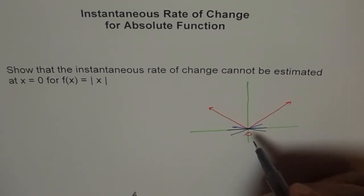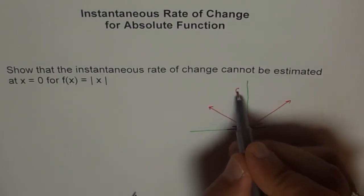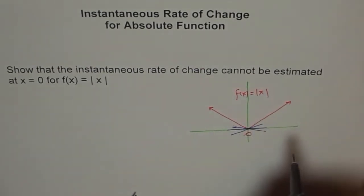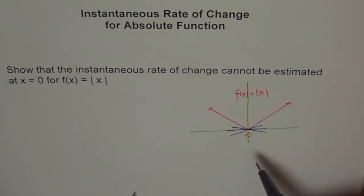So, slope of this line, slope of this line and any line in between at this point could be tangent to your function f(x) equals to absolute x. So, therefore, we are not certain which line to take and so we are unable to find and we say that it cannot be found at origin. That's one way of explaining it.